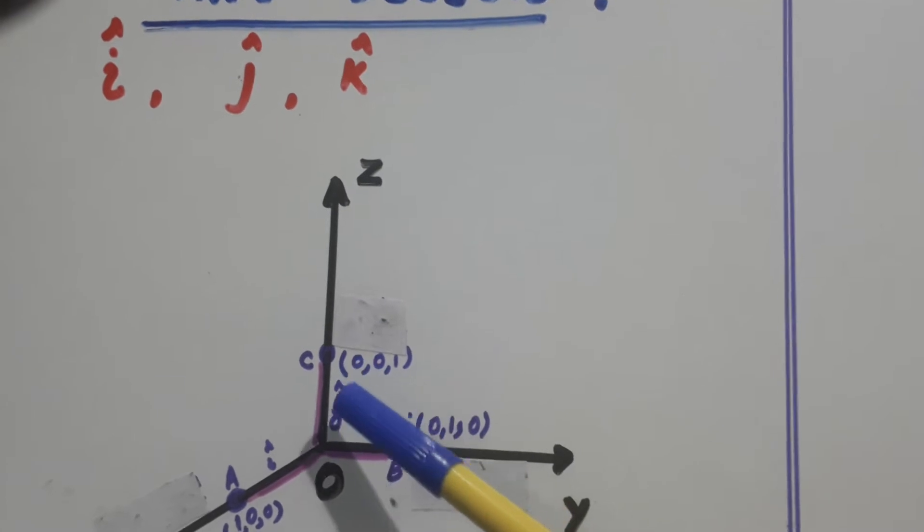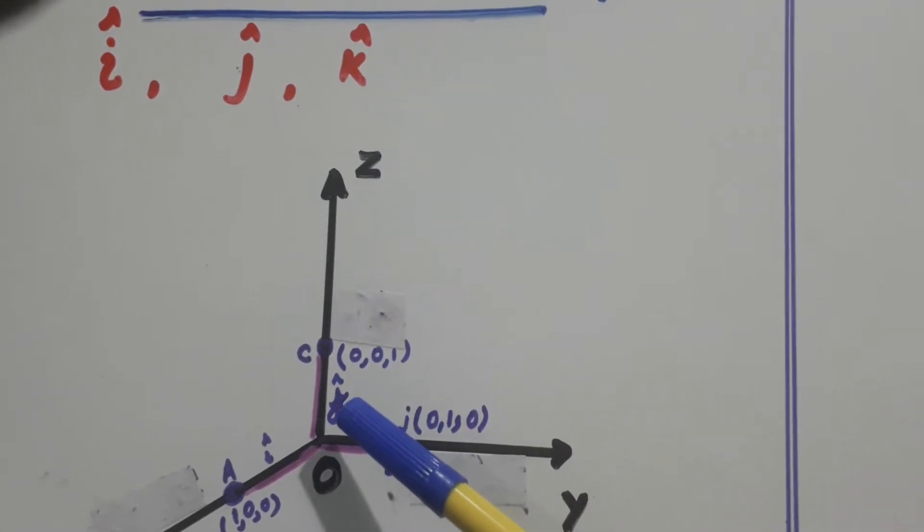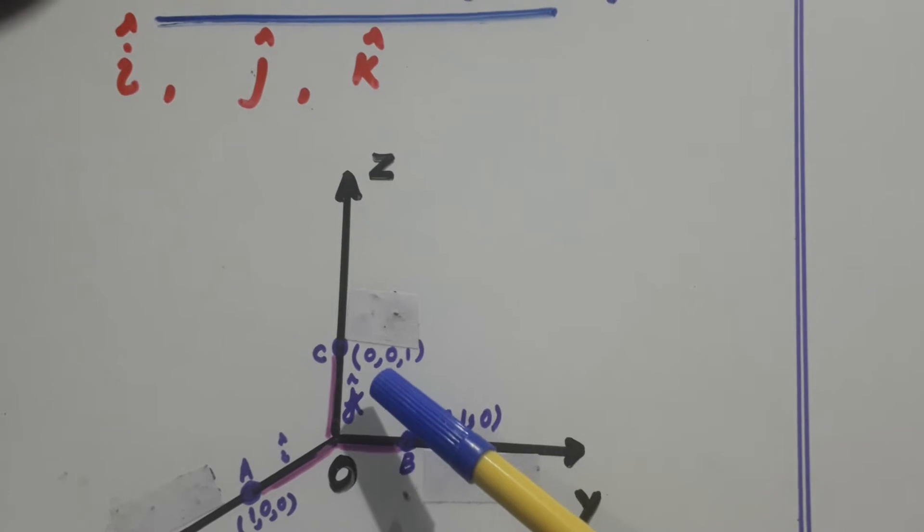Similarly, one unit on z-axis is k cap. And its coordinates are 0, 0, 1.